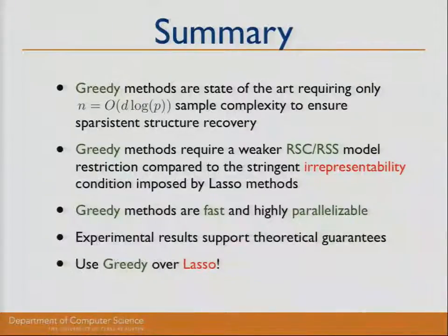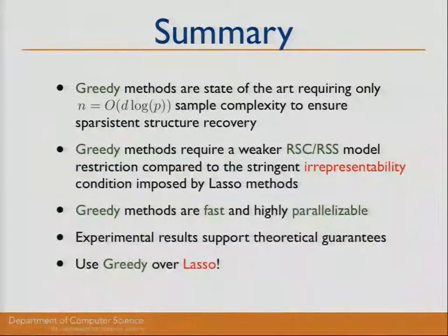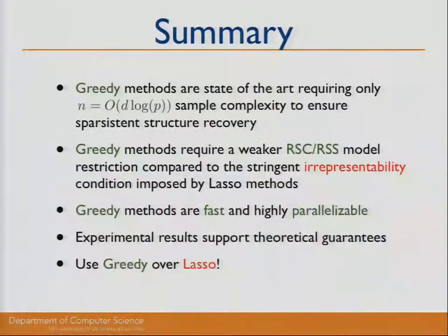Q: Have you looked at choosing multiple edges at a time — multiple forward, multiple backward? A: That's a good idea; it could help avoid wrong choices by selecting the best four edges, for example. The problem is we don't know how sparse the graph is. In the neighborhood case, if there's only a single true edge and you choose multiple edges in a forward step, you'd add edges not in the graph and run into problems.